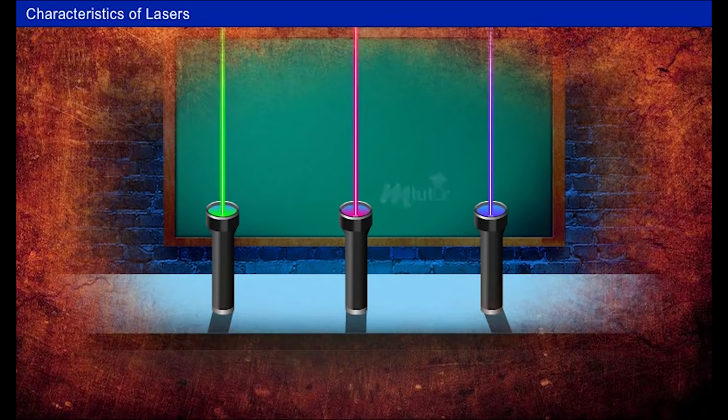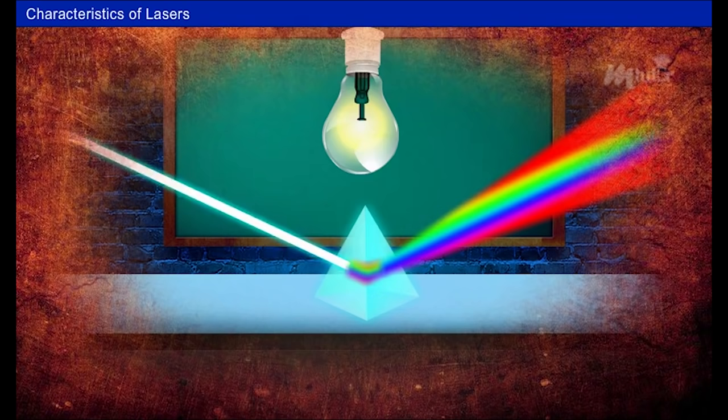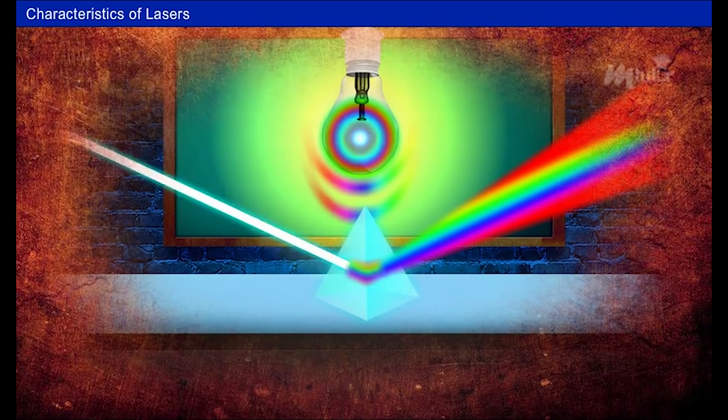It means the laser beam is made up of a single color or a single wavelength. In contrast, the ordinary white light from an incandescent light bulb is a combination of many colors or wavelengths and is certainly not monochromatic.